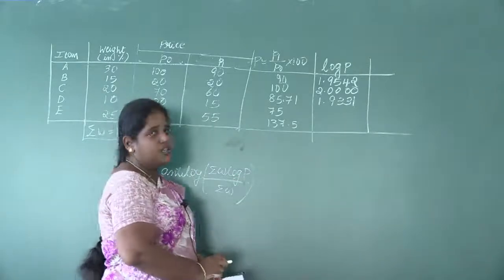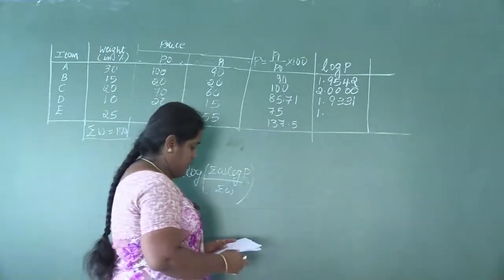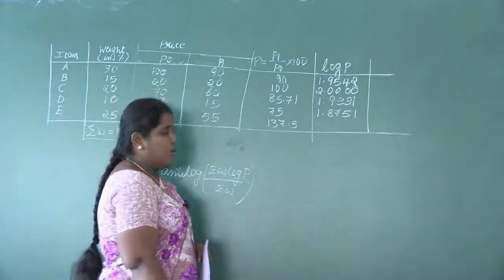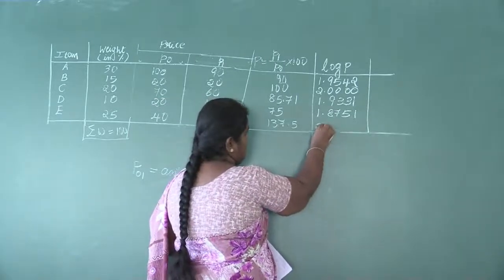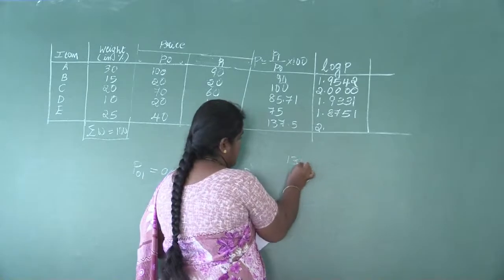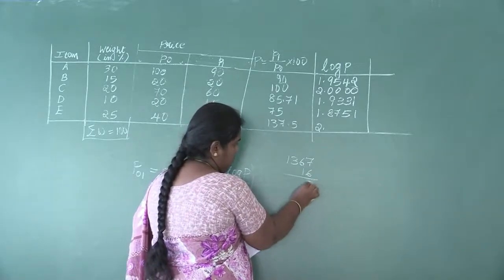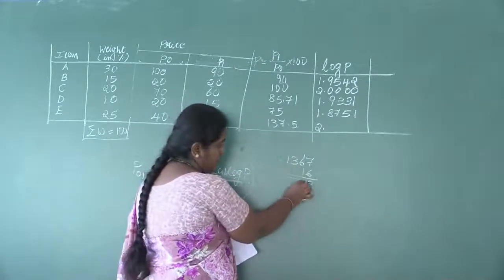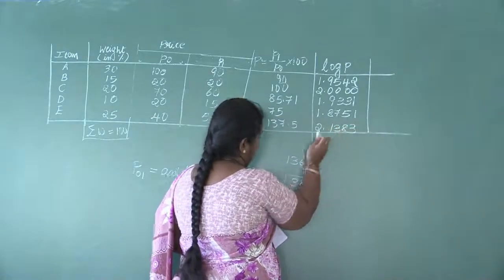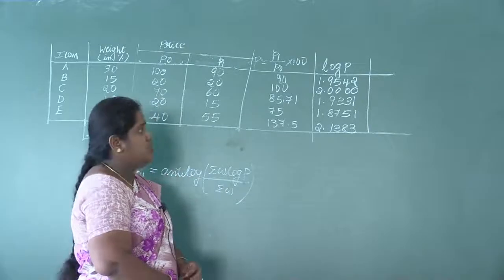For 75: two-digit number, characteristic 1. Table value for 75 under 0 is 8751, so log 75 = 1.8751. For 137.5: three-digit number, characteristic 2. See 13 under 7 — value is 1367; mean difference 5 gives 16. Adding: 7+6=13 carry 1, 6+6+1=8+3, so we get 1383. Therefore log 137.5 = 2.1383.